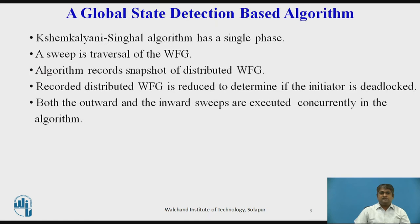The Shem Kalyani Single Algorithm has a single phase. It consists of a fan-out sweep of messages outwards from an initiator process and a fan-in sweep of messages inwards to the initiator process. A sweep is a traversal of the wait-for-graph in which all messages are sent in the direction of the WFG edges, or all messages are sent against the direction of the WFG edges.